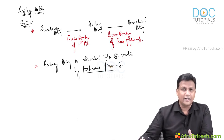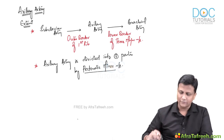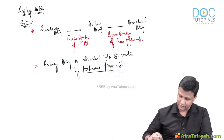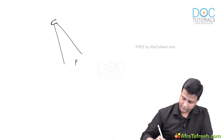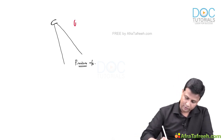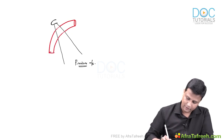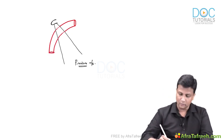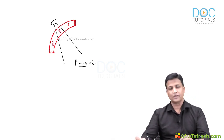Instead of writing in a paragraph, let's draw the diagram of the axillary artery and see its branches. Imagine the coracoid process here and the pectoralis minor muscle. The axillary artery starts from the outer border of the first rib, passes behind the pectoralis minor muscle, and moves down into the arm. The part before the muscle is the first part, the part behind the muscle is the second part, and the part after the muscle is the third part.